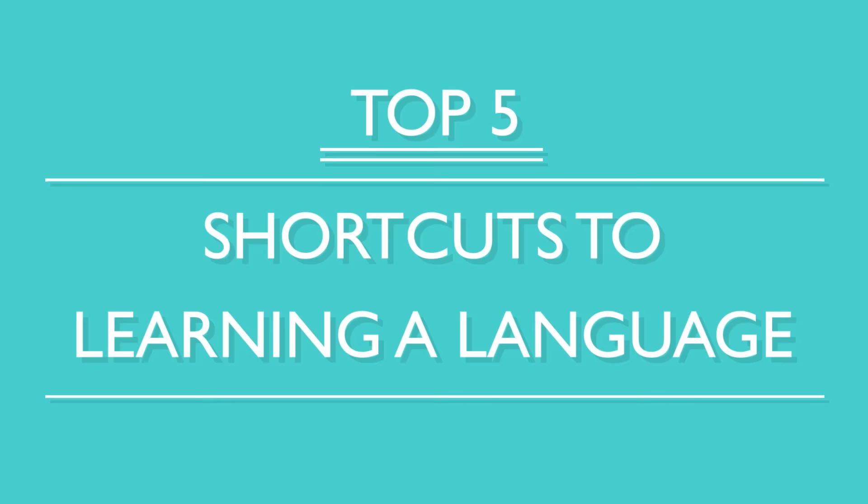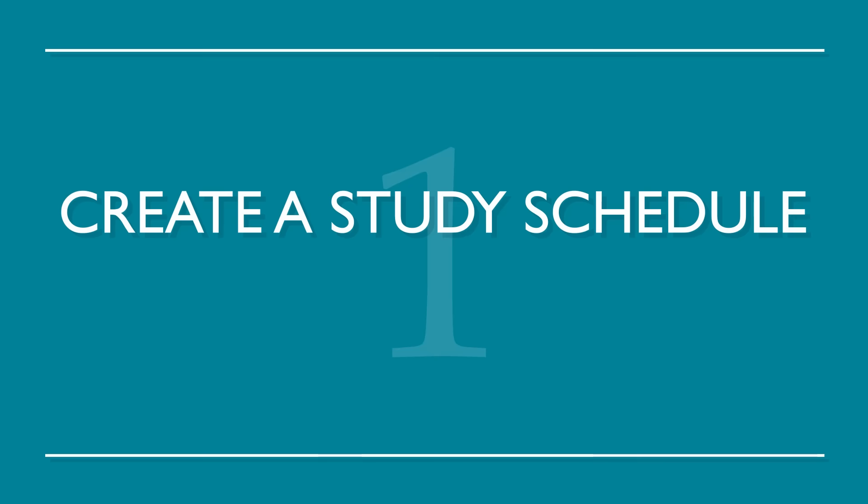You've decided to study a new language. So, now what? You want to become fluent fast, right? Here are the top five shortcuts to learning a language. Number 1: Create a study schedule and set some goals. Many language learners are unorganized. Creating a schedule allows you to free up time to study consistently. Goals give you motivation and something to strive for.